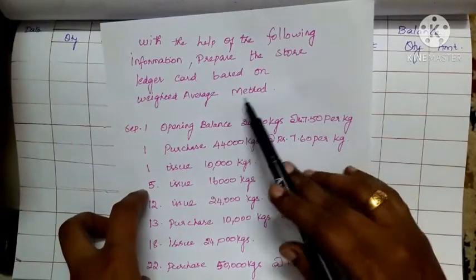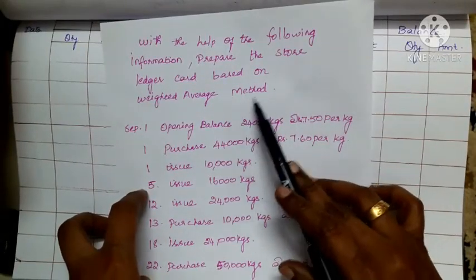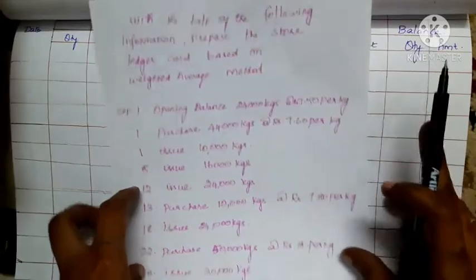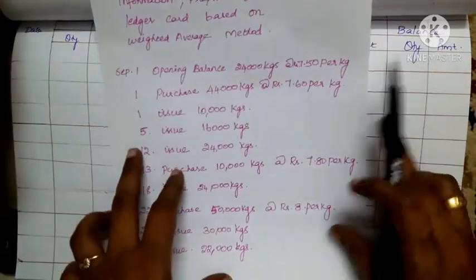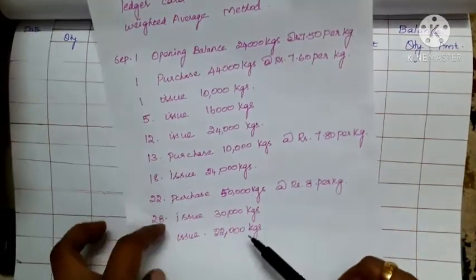With the help of the following information, prepare a store ledger based on the weighted average method. We have opening balance, purchase, and issues.